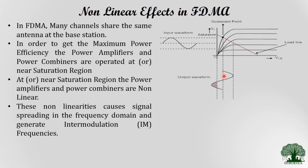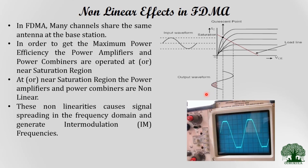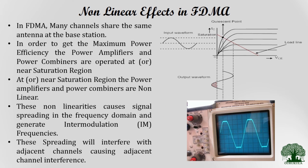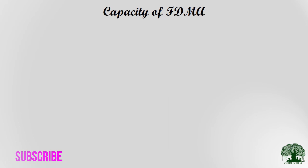Nonlinear characteristics cause the signal to spread and introduce intermodulation frequencies — irrelevant frequencies not required for signal processing. This signal spreading causes interference between adjacent channels, as the spread signal overlaps neighboring frequency ranges. This nonlinearity must be addressed when designing FDMA systems: the operating ranges of power amplifiers and combiners must be kept away from saturation to suppress adjacent channel interference.